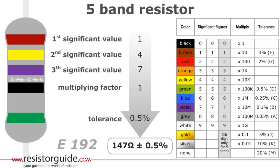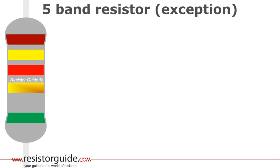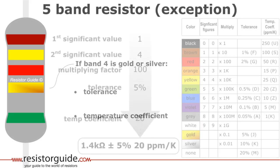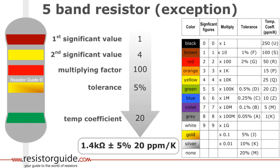An exception to this is the five band resistor with a fourth band of gold or silver. In this case, the fourth band represents the tolerance and the fifth band, the temperature coefficient of resistance. Using the chart, we see that this resistor has a resistance of 1.4 kilo ohms with a tolerance of 5% and a temperature coefficient of 20 parts per million per Kelvin.